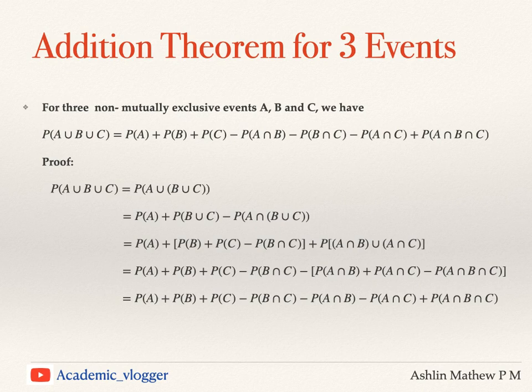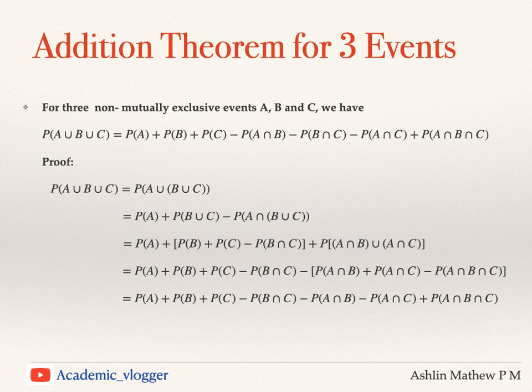We expand the probability of B union C using the addition theorem for two events: probability of B plus probability of C minus probability of B intersection C. Substituting, we get probability of A plus probability of B plus probability of C minus probability of B intersection C, and then we still need to handle probability of A intersection (B union C).